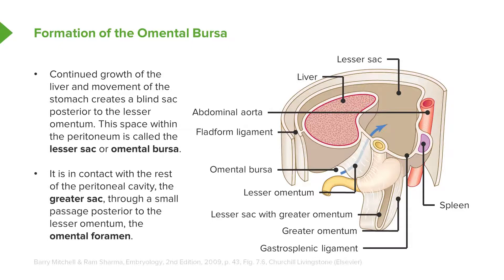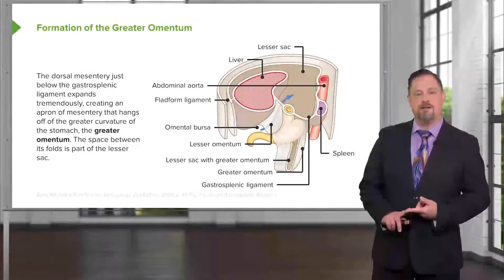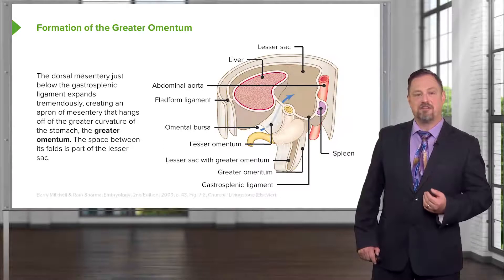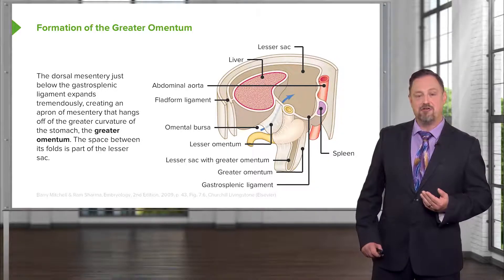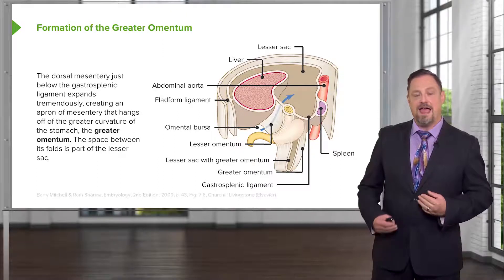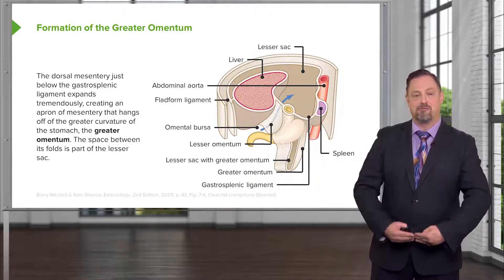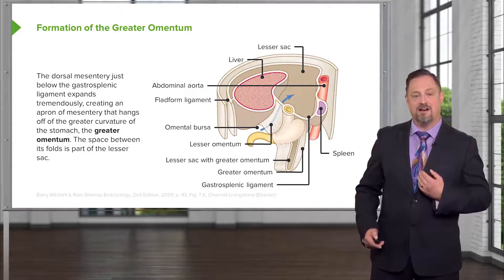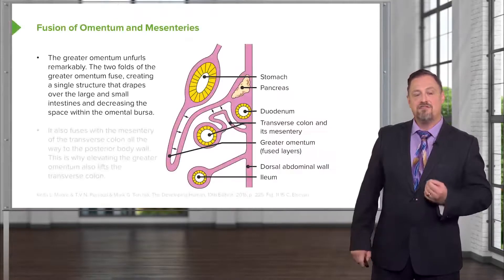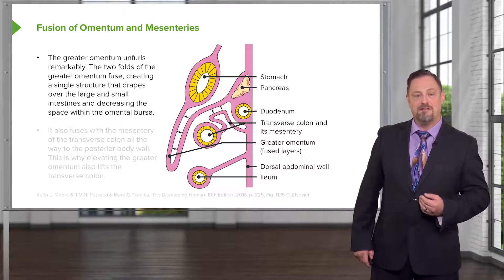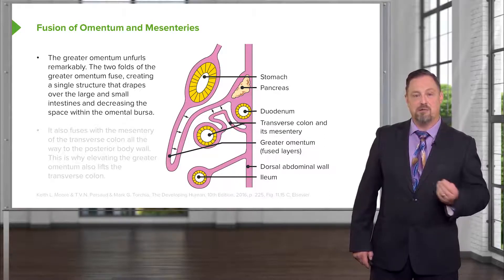So the lesser omentum is going to be containing the entryway to the lesser sac or omental bursa from the rest of the peritoneal cavity, which is often referred to as the greater sac. Now, the dorsal mesentery running between the gastrosplenic ligament is going to expand tremendously along the stomach's greater curvature. As it expands, it kind of folds forward and loops back, creating a great sheet of tissue that overlies the intestines. This sheet of tissue is going to become the greater omentum, and initially it's continuous with the space posterior to the stomach — the lesser sac, or the omental bursa.